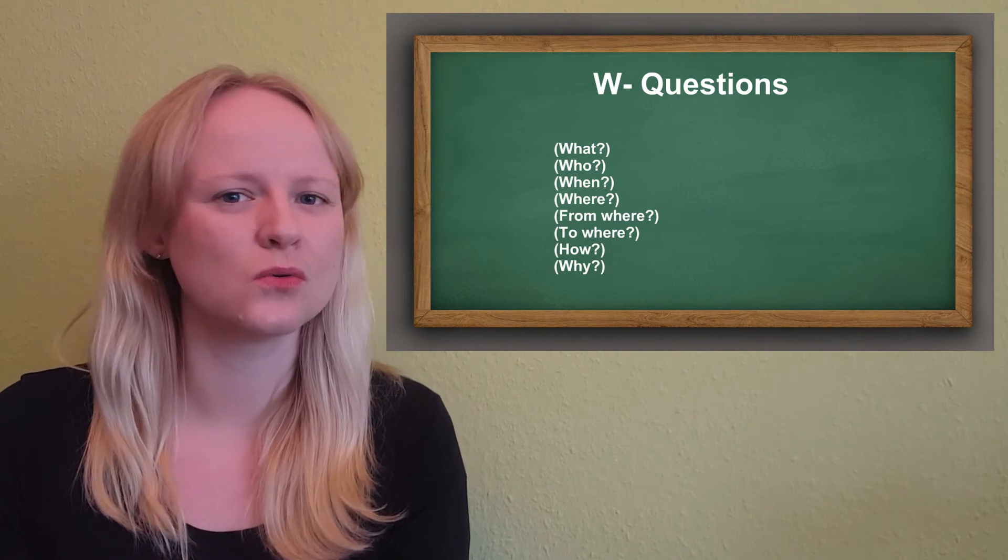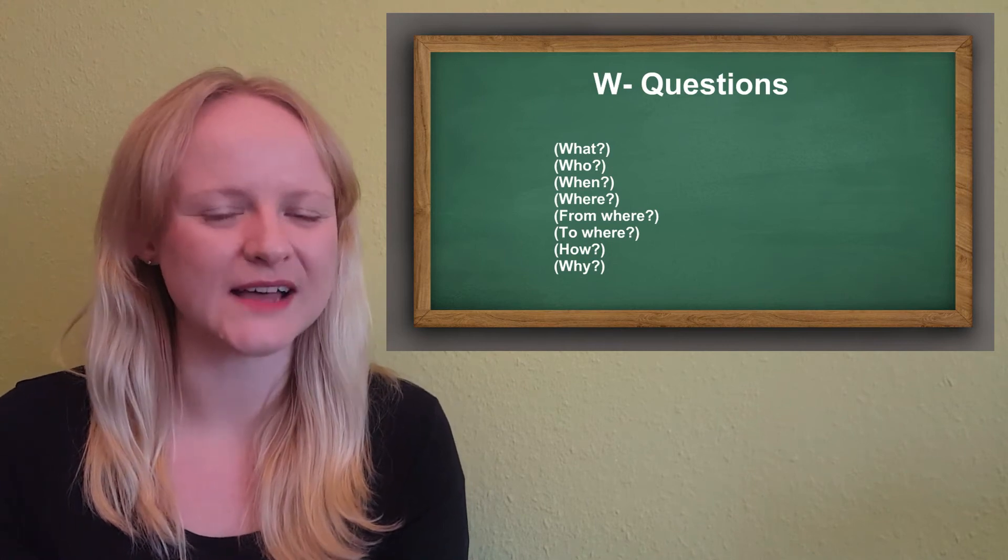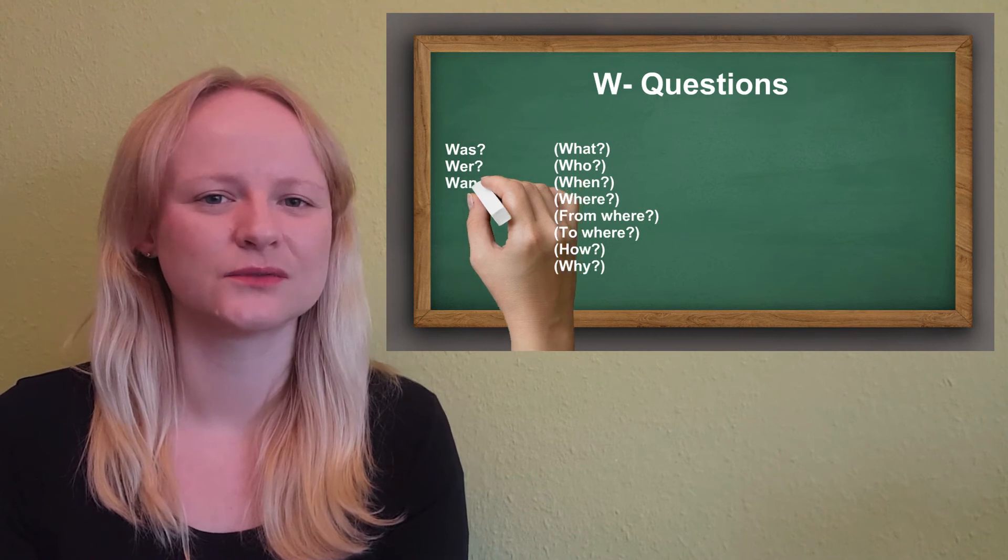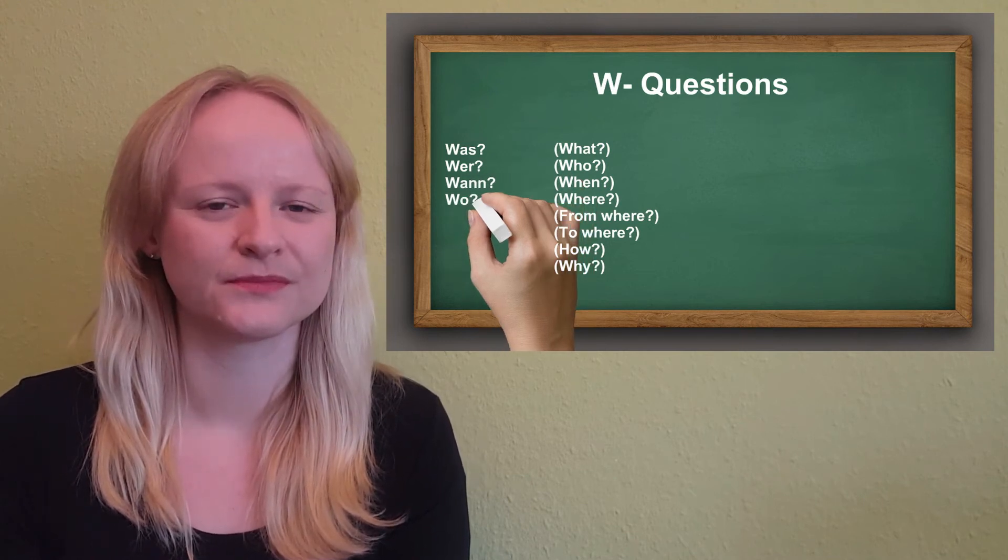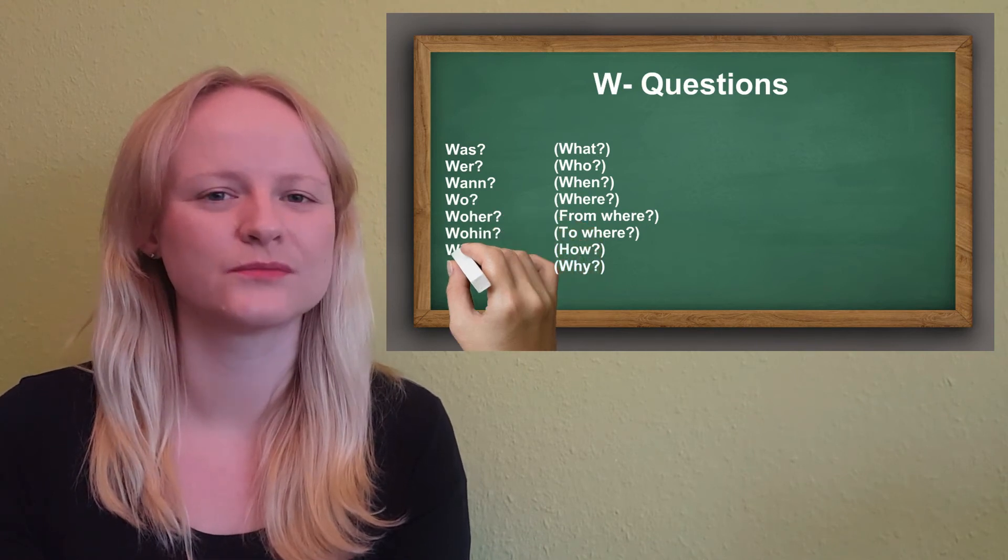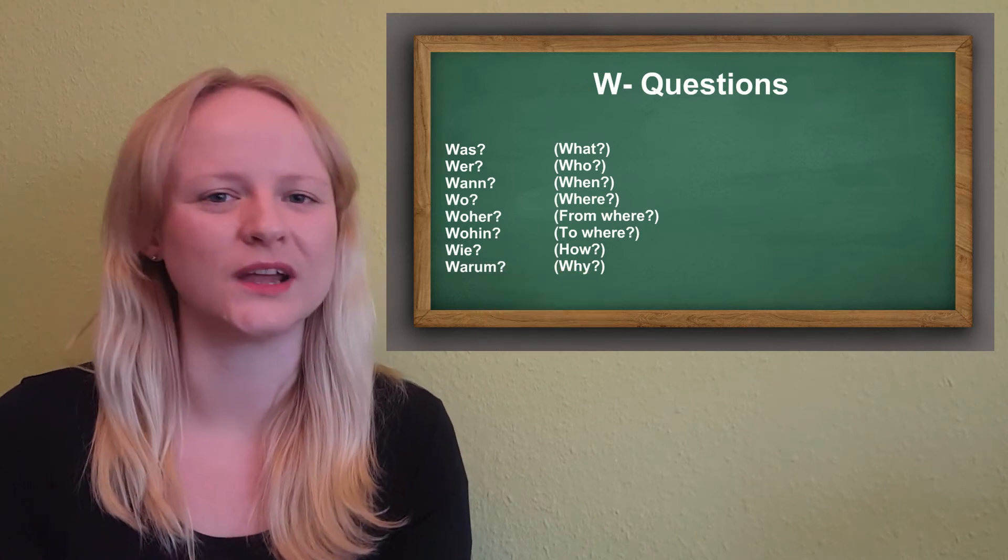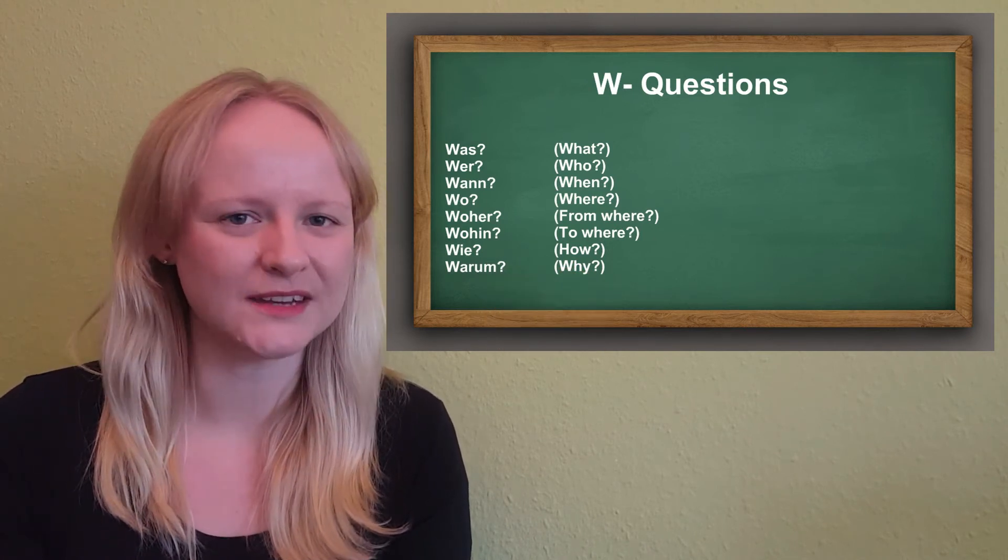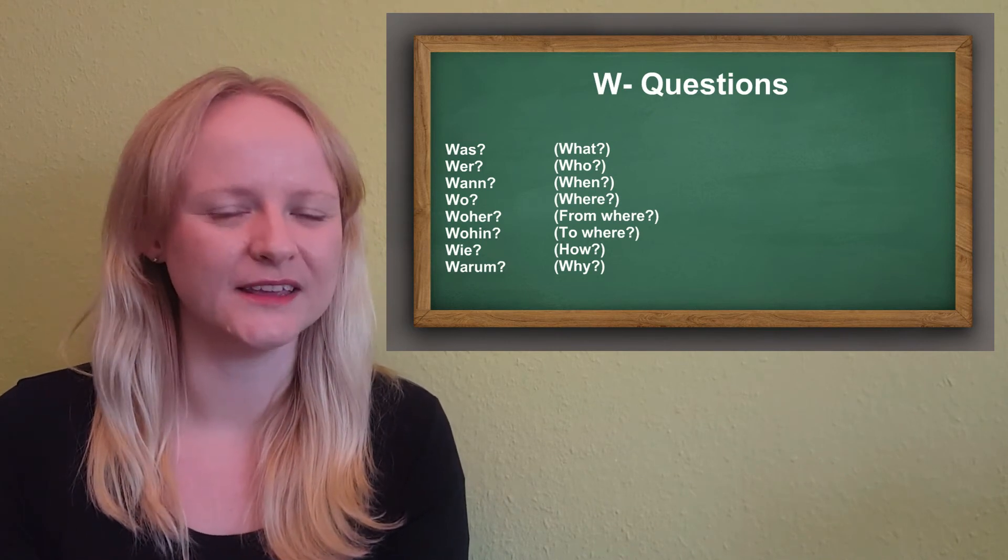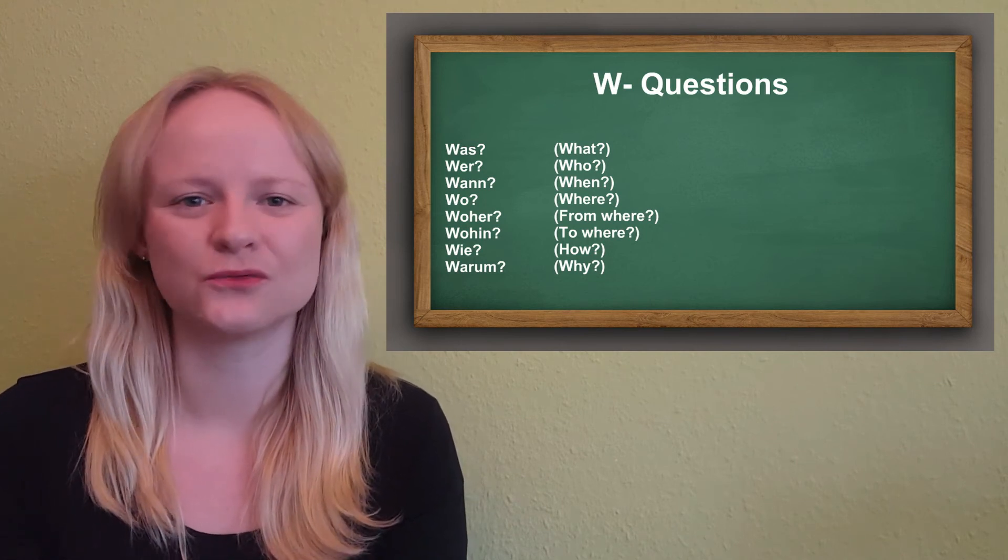When, why, who, where, etc. In German, these question words are: was for what, wer for who, wann for when, wo for where, woher for from where, wohin for to where, wie for how, and warum for why.